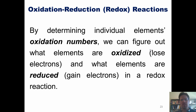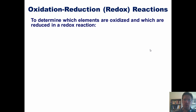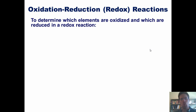By determining individual elements' oxidation numbers, we can figure out what elements get oxidized — that is, lose electrons — and what elements get reduced — that is, gain electrons — in a redox reaction. I'll show you how. To determine which elements are oxidized and which ones are reduced in a redox reaction, we have to go through the following steps.